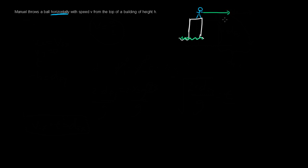Horizontal is very important. He's throwing this ball straight out. From that, we can already say that the initial velocity in the y direction is zero — because at the exact moment of throwing, he's going perfectly horizontal. It's the same idea as when you throw something up and at the vertex there's only horizontal velocity.